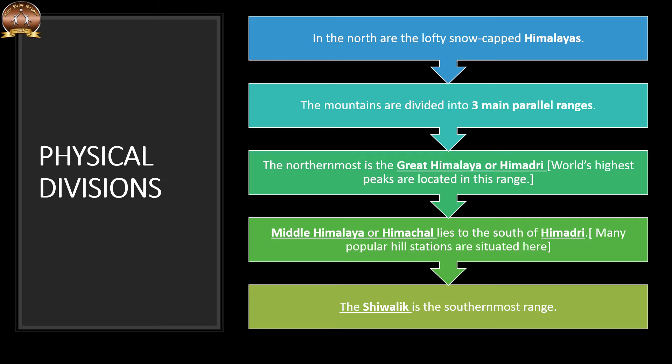India is marked by a diversity of physical features such as mountains, plains, plateaus, coast and islands. To the north are the lofty snow-capped Himalayas. 'Him' plus 'Alaya' means the abode of snow. The Himalayan mountains are divided into three main parallel ranges.